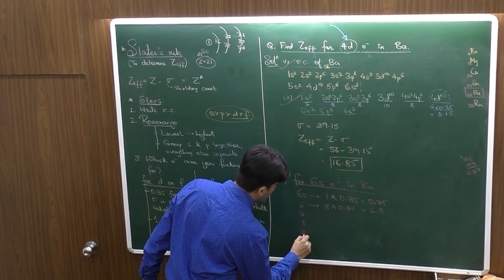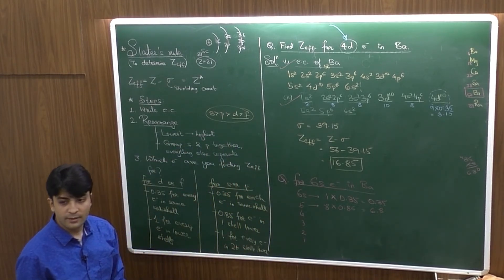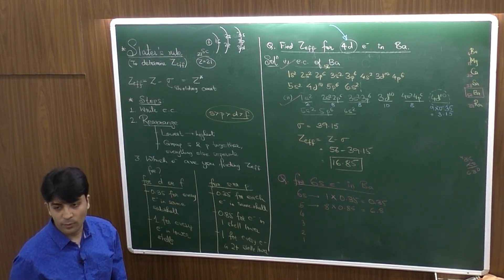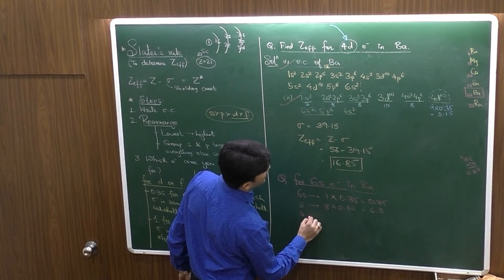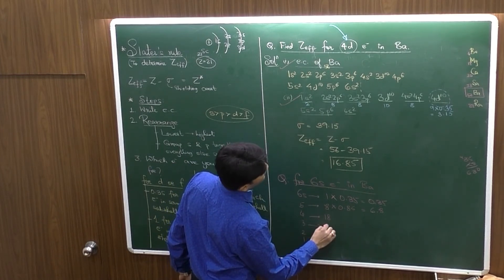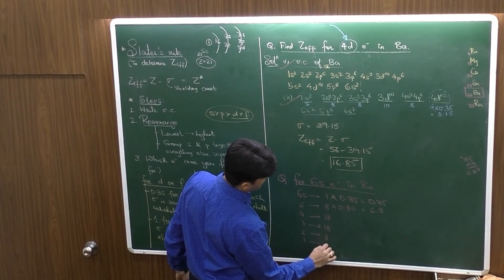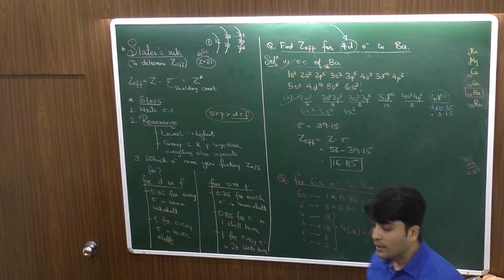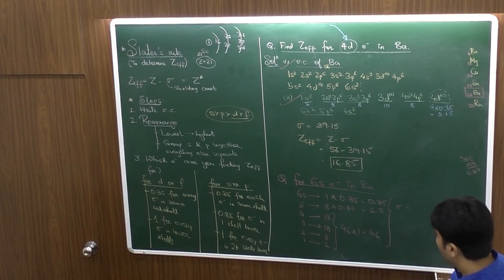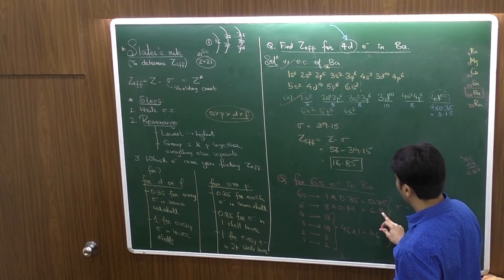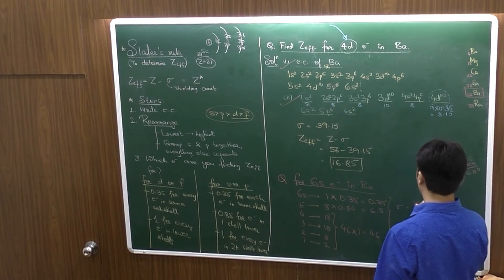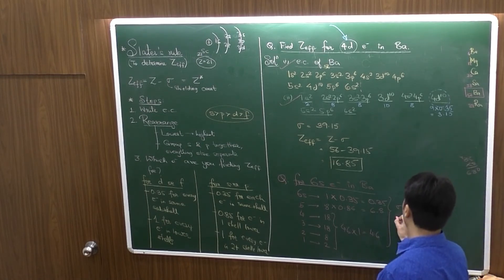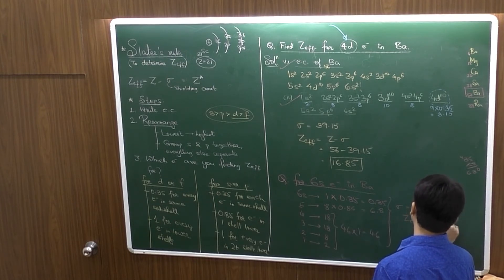Then 4, 3, 2, 1. 2 or 2 plus shells lower, just add up electrons, multiply by 1. Meaning, you have to just add up the electrons. In 4th, how many are effective electrons? 18. 3rd, 18, 8 and 2 adds up to 46 into 1 equal to 46. And these 3 values will add up to give you sigma, the screening constant. And that is 53.15. So, Zeff would be equal to 56 minus 53.15 which is 2.85.